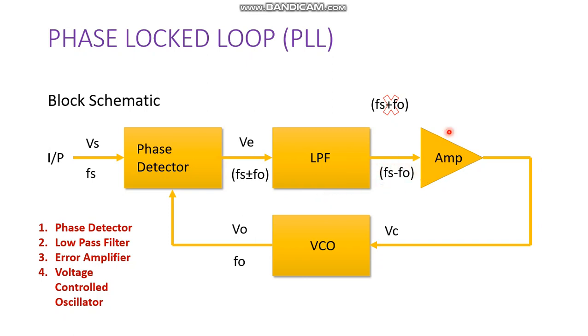So now this difference fs minus fo will be amplified as a control voltage vc to this VCO, which will produce the vo with certain frequency of fo. So now this fs minus fo, this fs and fo, will be compared at the phase detector and there will be